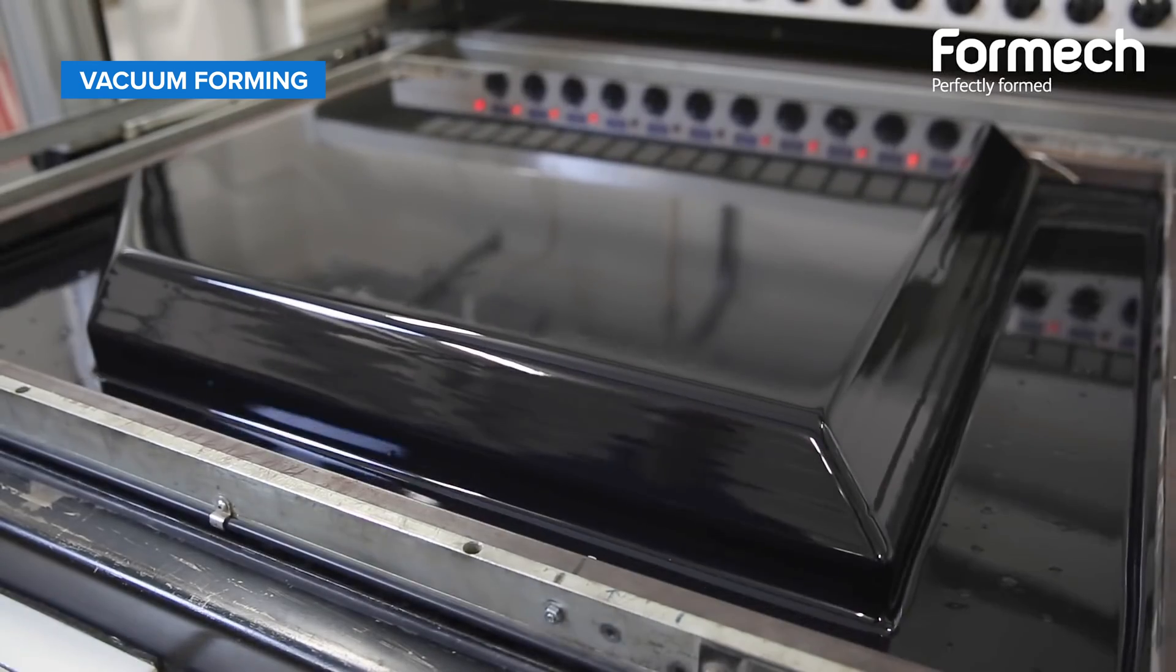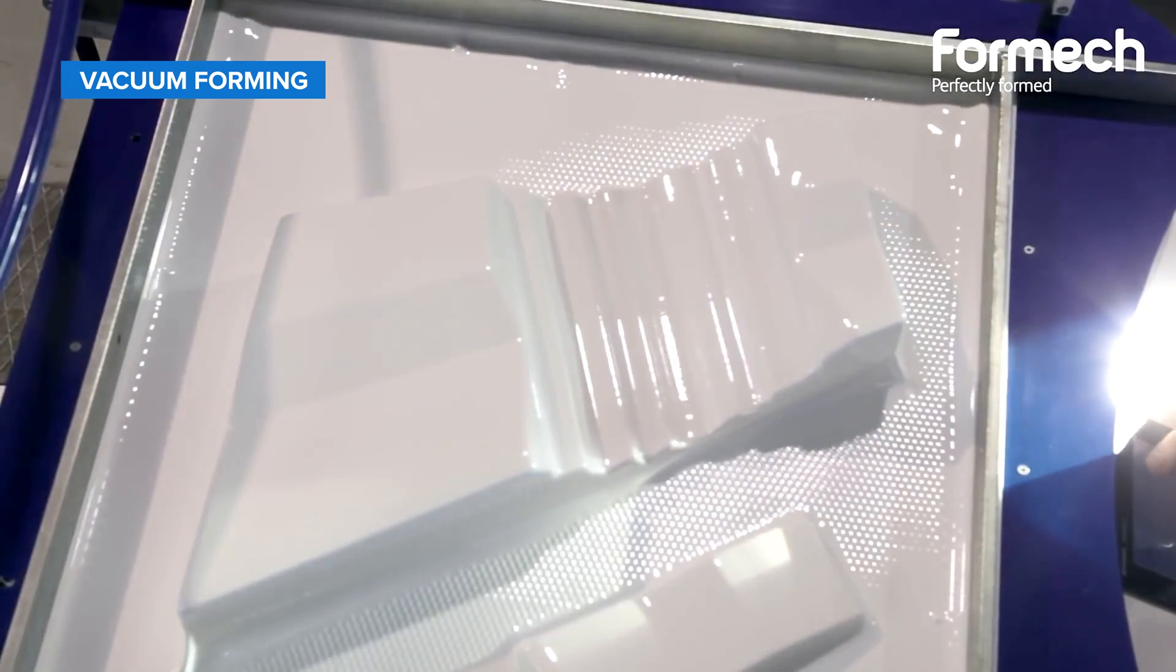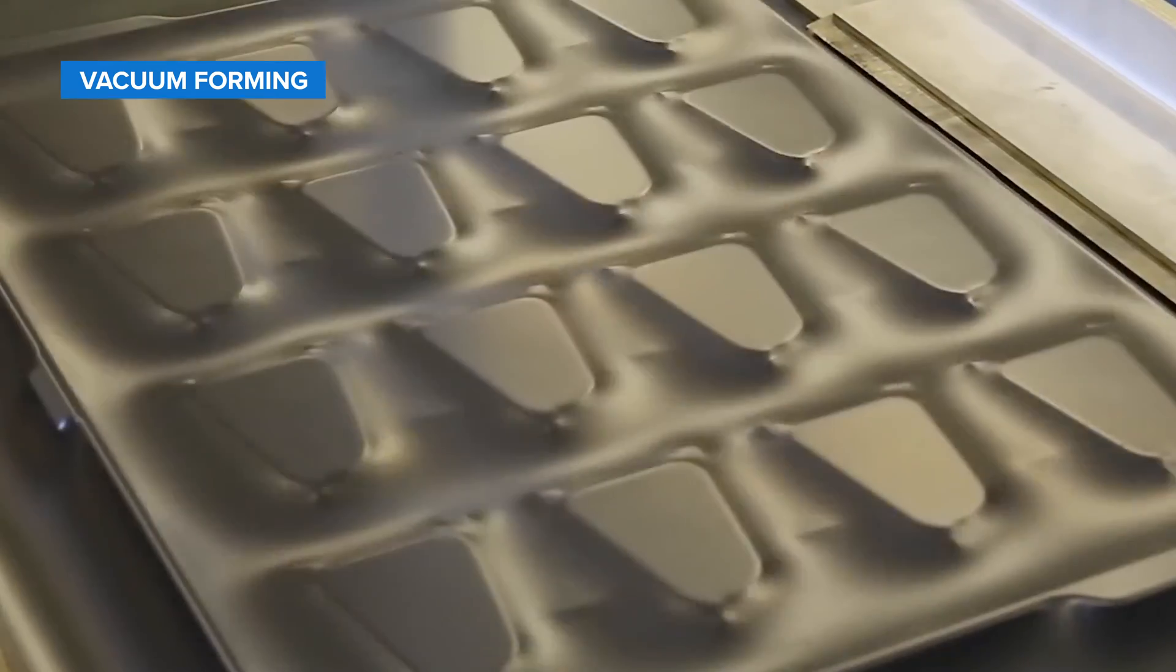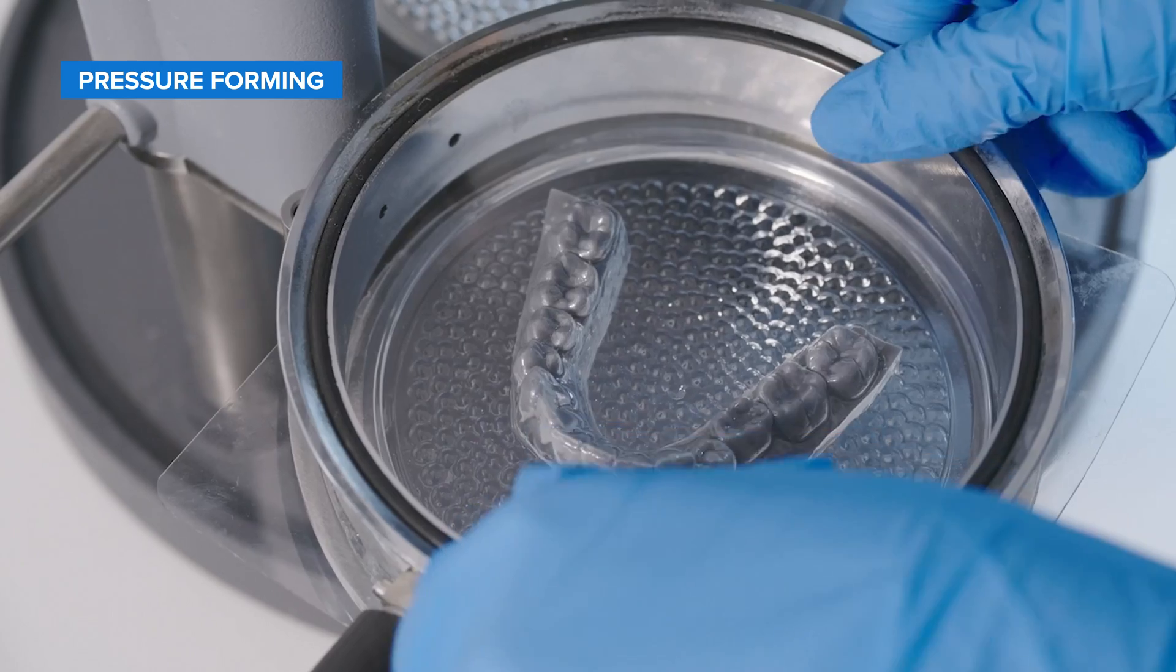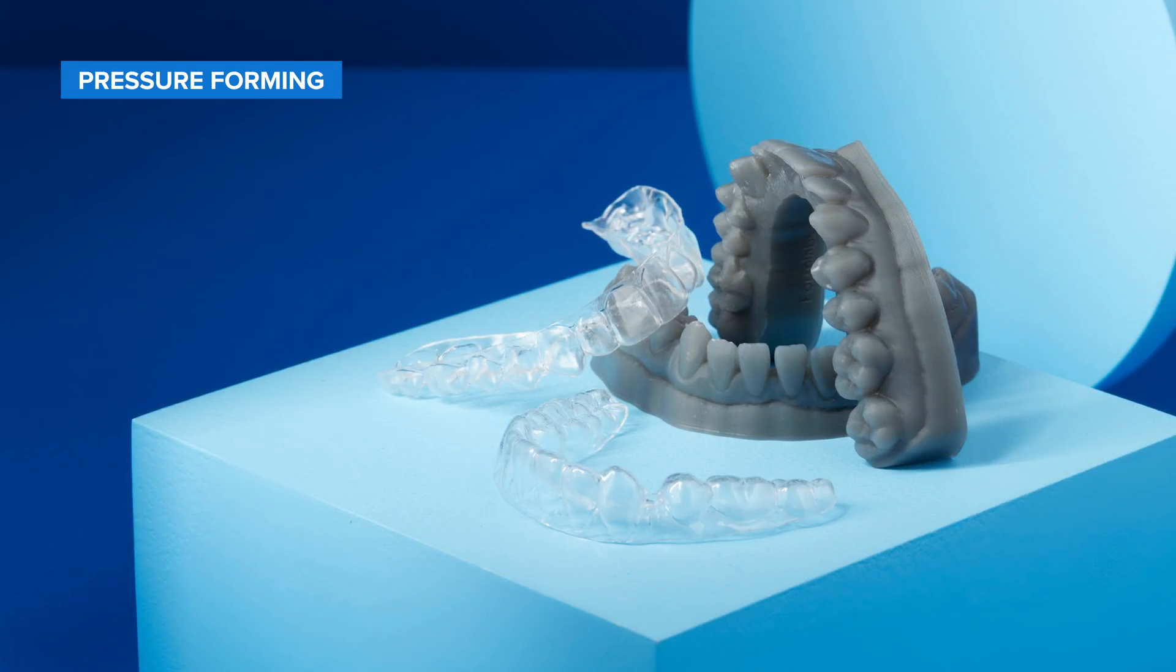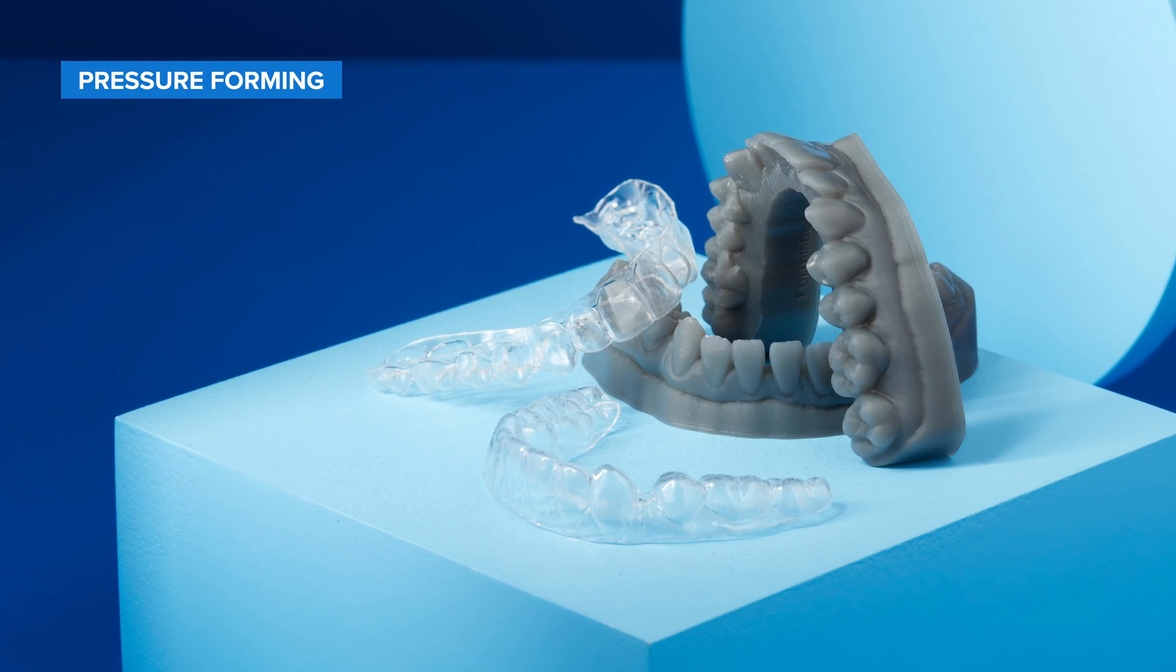It is ideal for parts that only need to be precisely formed on one side, such as contoured packaging for food or electronics. With pressure forming, the heated sheet of plastic is forced onto the tool with pressure, which makes it possible to form complex and intricate details and create parts with a surface finish similar to injection molded parts.